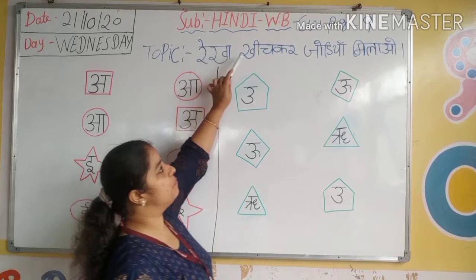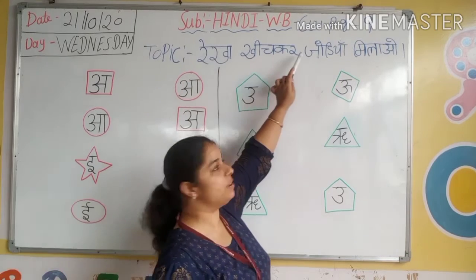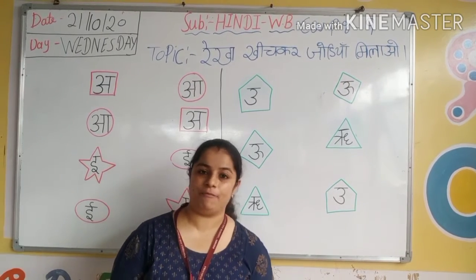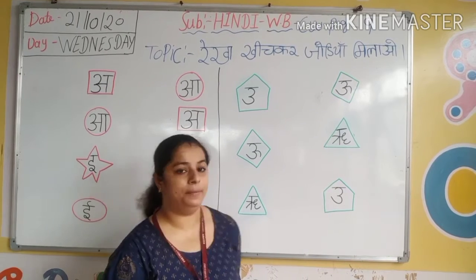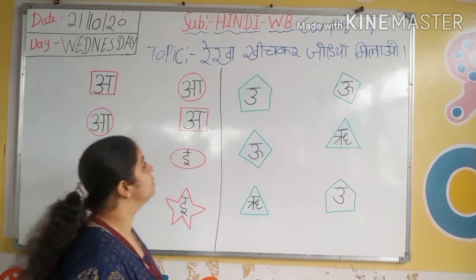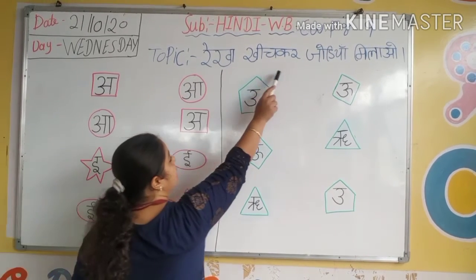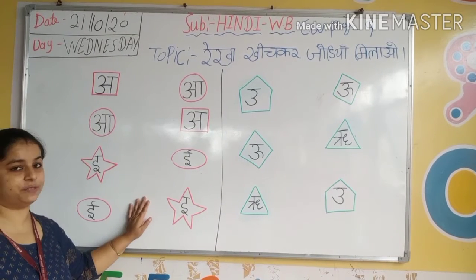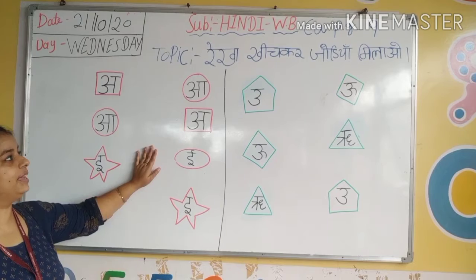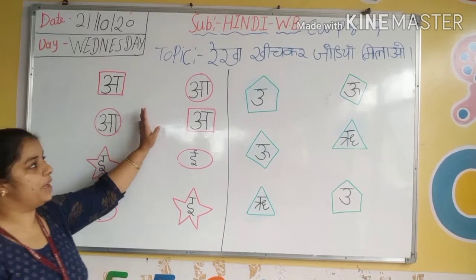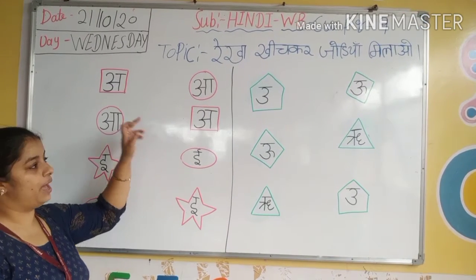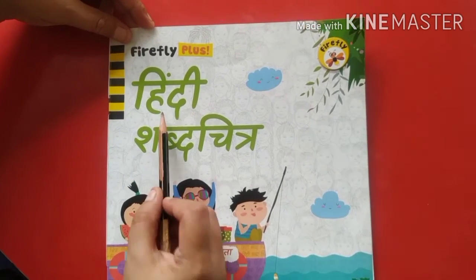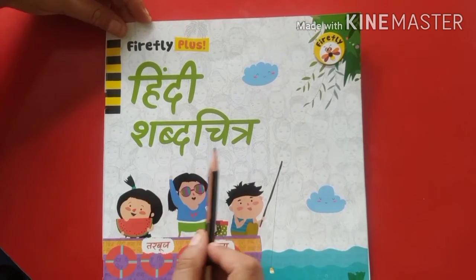And today's subject: Hindi workbook classwork, page number 9. Aaj ka hamaara subject ay Hindi workbook page number 9 pey. And today's topic: rekha khich kar jodiya milao. Hame kya kya karna hai? Yaap pey jho saare pictures banay giren hai, letter banay giren hai, usnei haame rekha khich kar jodiya milao. Now kids, take this book — Hindi shabd chitra.